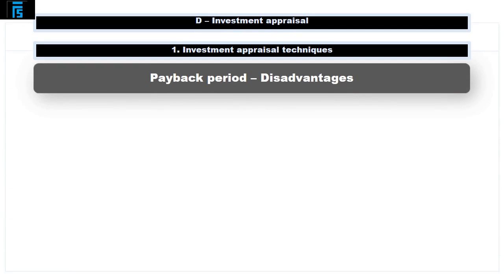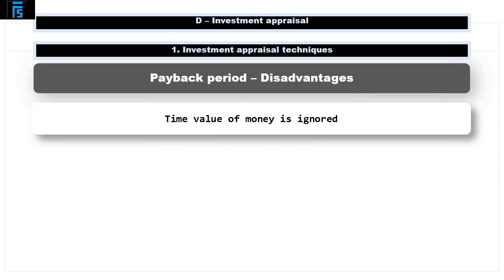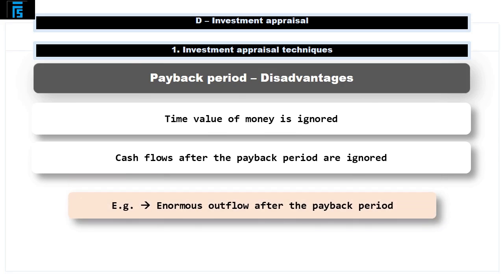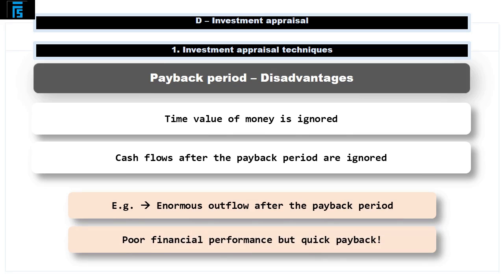However, payback period also has several disadvantages. It takes no account of the time value of money — more on this later. And it ignores all cash flows after the payback period has been reached. For example, a project may have a really fast payback, but then soon after the payback period has been reached, there could be an enormous outflow to decommission the site. Overall, the project could be very poor in terms of its financial performance, even though it has paid back quickly.